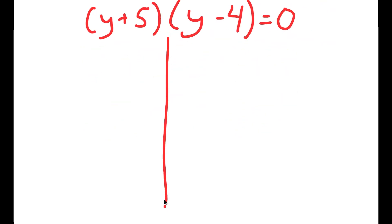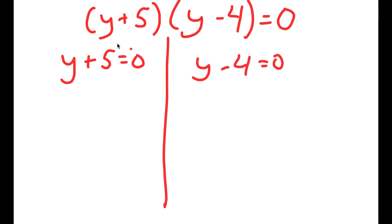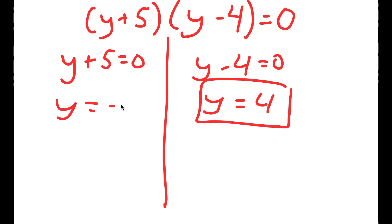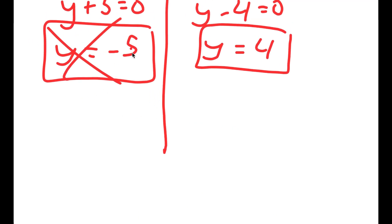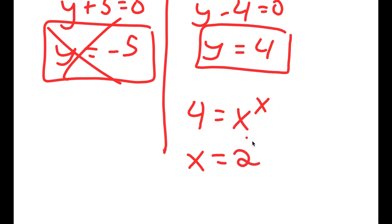This gives me two equations: y plus 5 equals 0 and y minus 4 equals 0. From y minus 4 equals 0, y is equal to 4. For y plus 5 equals 0, y would be negative 5, but this is not possible because y equals x to the power of x, and you can't get a negative result. So I get 4 equals x to the power of x. The only number that works is 2, because 2 to the power of 2 is 4. So x equals 2 is my answer.